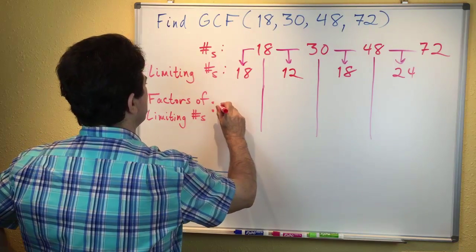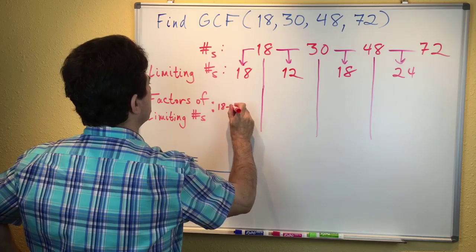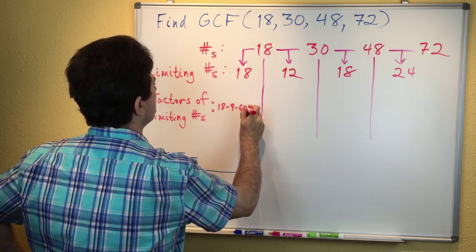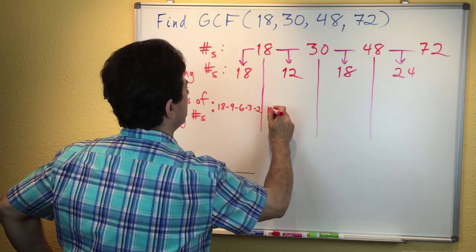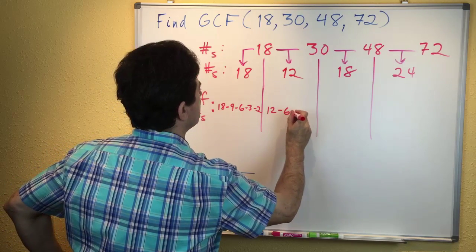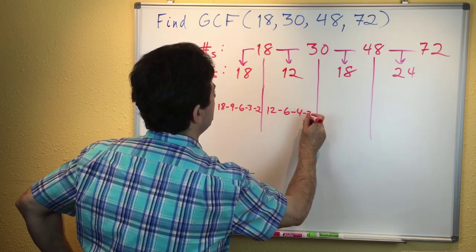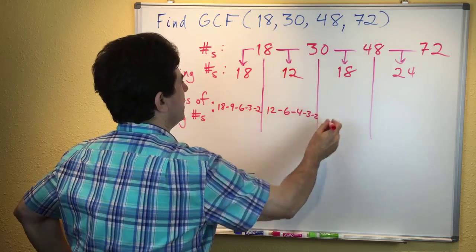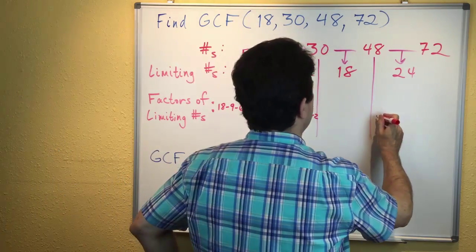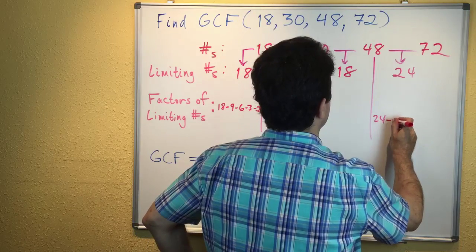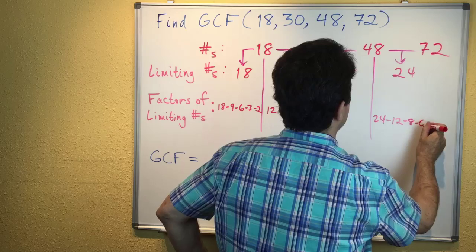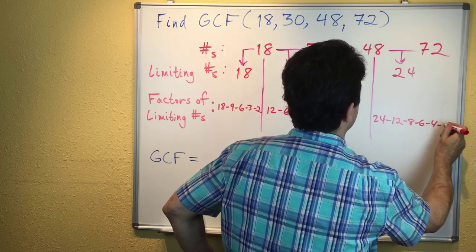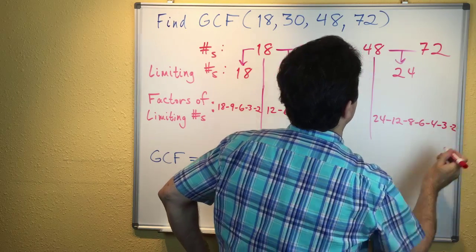Now we look at the factors of these limiting numbers. The factors of 18 are 18, 9, 6, 3, 2. Factors of 12 are 12, 6, 4, 3, 2. Factors of 24 are 24, 12, 8, 6, 4, 3, 2.